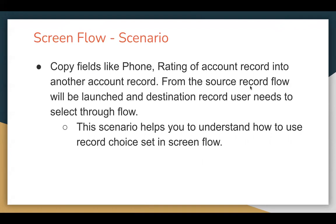From the source record, the Flow will be launched. So if I open any account record, that Flow will be available. If I launch that Flow, that record will be considered as the source record from where phone and rating values will be copied. The destination record the user needs to select through the Flow, which will show a list of available records. The user will select one record which will be considered as the destination record. This scenario helps you understand how to use record choice set in ScreenFlow.